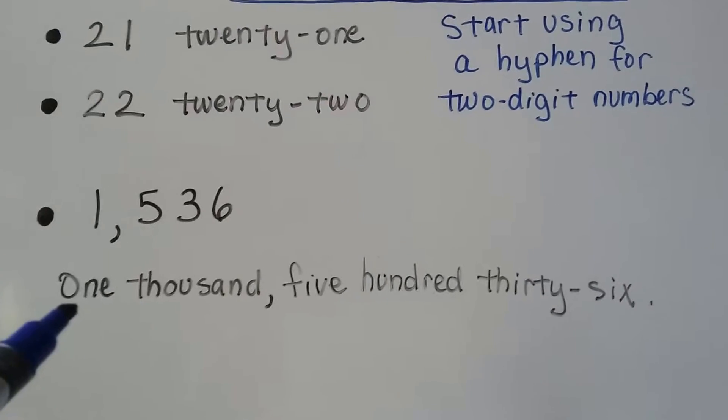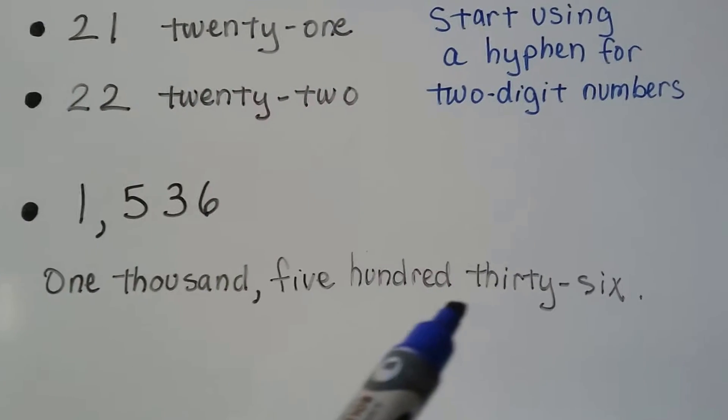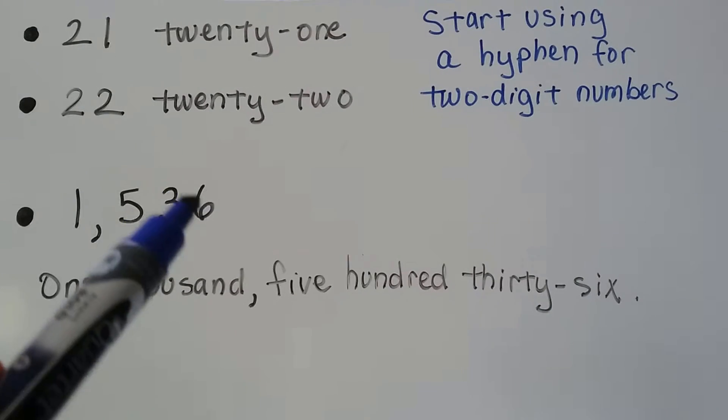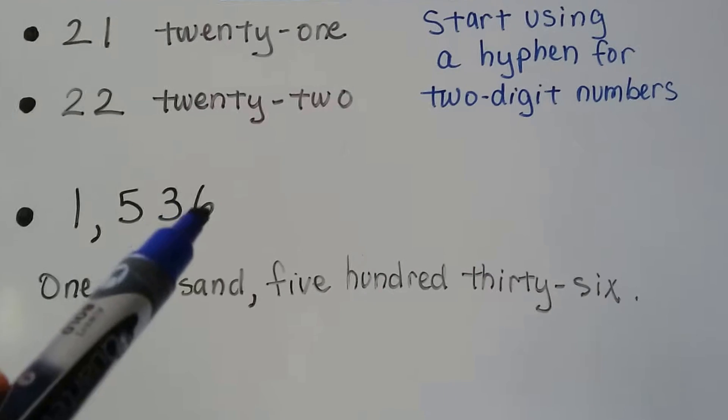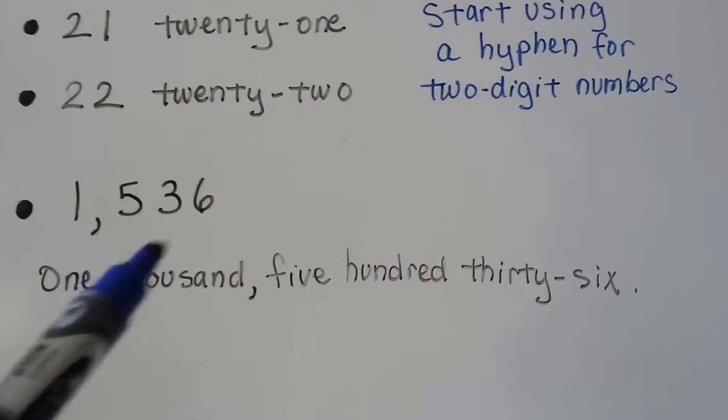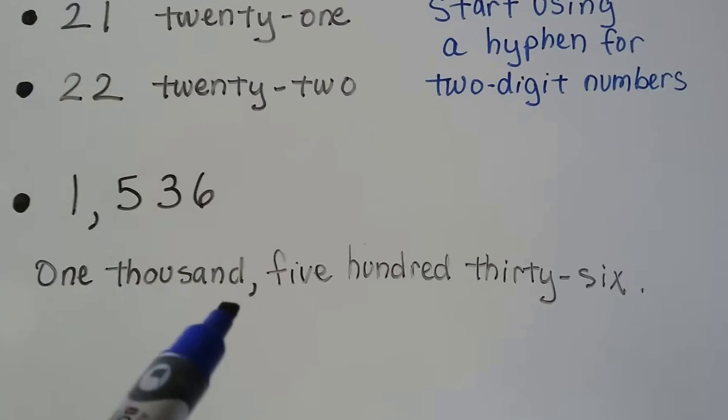This number is one thousand comma five hundred thirty hyphen six. We write a hyphen in between this thirty and this six here. This is the thousands period. This is the ones period. And we put the comma after the thousands.